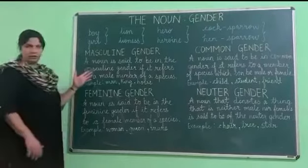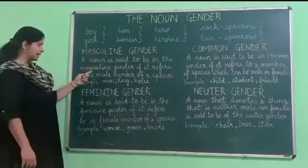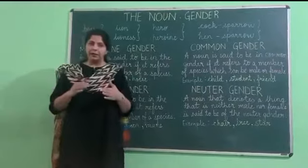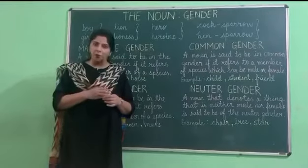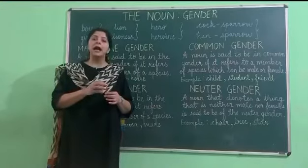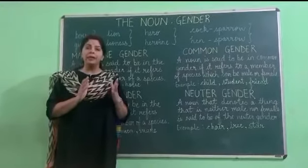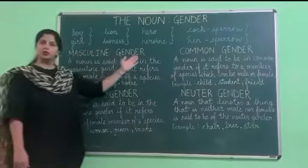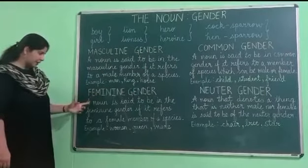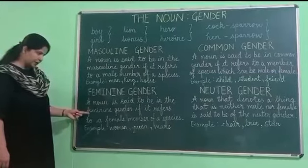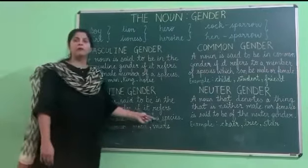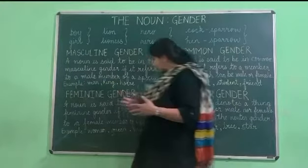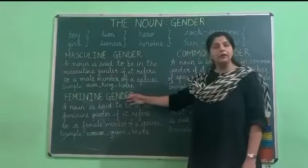Let's start with the masculine gender. A noun is said to be in the masculine gender if it refers to a male member of a species. It means if we are talking about a boy, a man, a lion, a horse — they are the male members of a species, so they are known as the masculine gender. A noun is said to be in the feminine gender if it refers to a female member of a species. If you talk about a girl, a woman, a mare, a queen — they are the feminine gender.